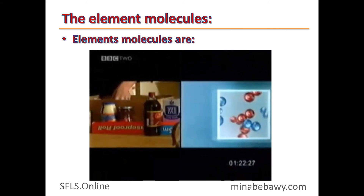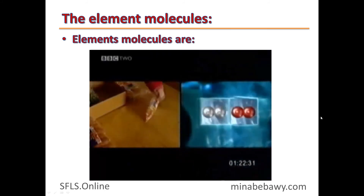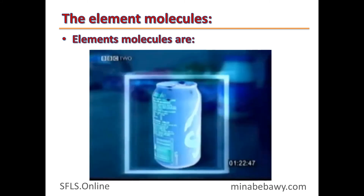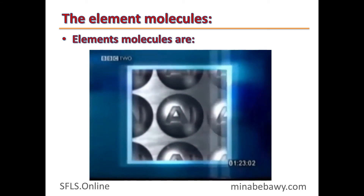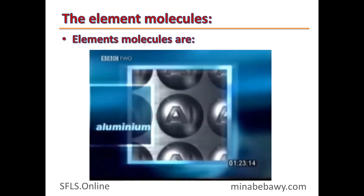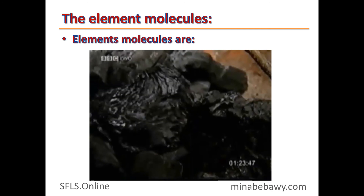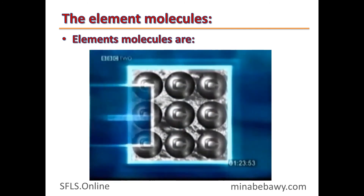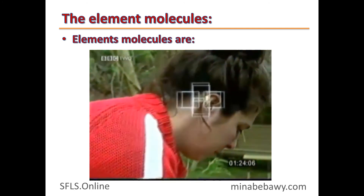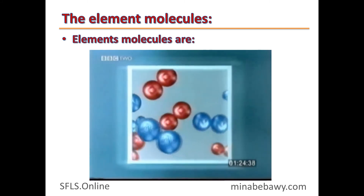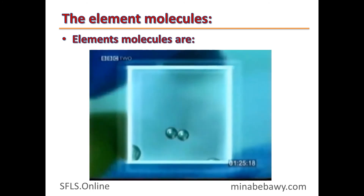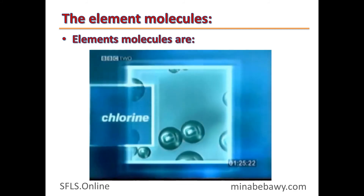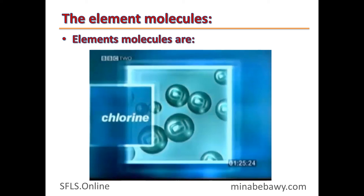Everything around us is formed of molecules, and each molecule is formed of atoms. For example, this aluminum can is formed of aluminum atoms — aluminum is an element, and because it is a metal it is a monoatomic element. Coal is formed of carbon atoms. A piece of gold is formed of gold atoms. Air is composed of oxygen and nitrogen atoms. Even chlorine liquid, used for cleaning, is composed of chlorine atoms. Everything around us is formed of atoms.